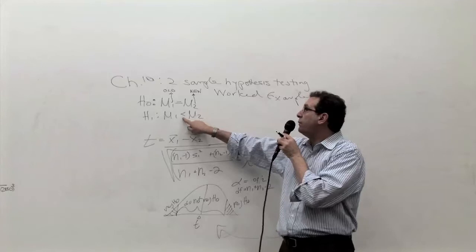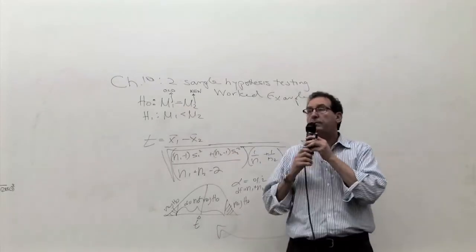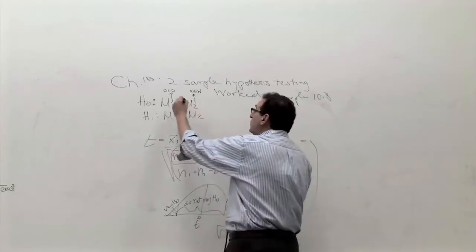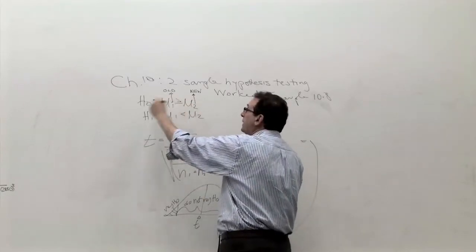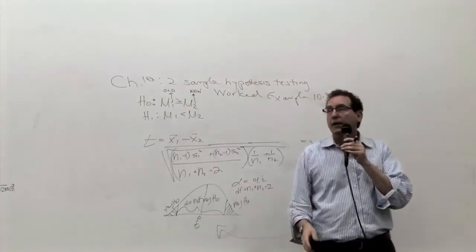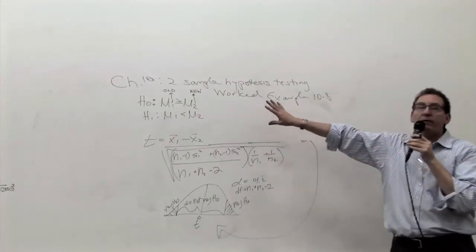But if the H1 is this way, what does the H0 have to be? It has to be greater than or equal. Remember, the equal sign always appears in the H0, which is the opposite of less than, greater than or equal.